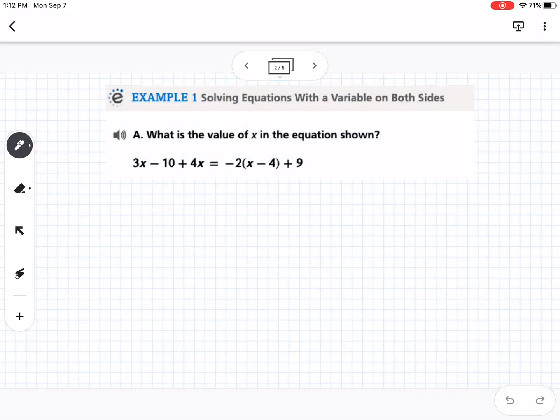So our first example is, what is the value of x in the equation shown? We are going to start with distributing. So I'm going to distribute the negative 2, and then I'm also going to combine like terms. I'm going to use different colors here. So let's use red. I have a 3x and a 4x on this side of the equation that I can combine.